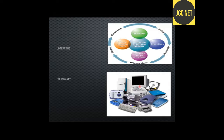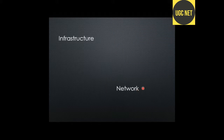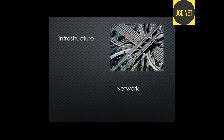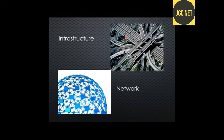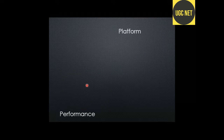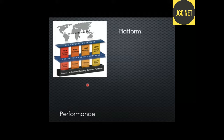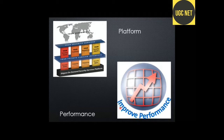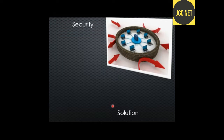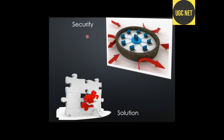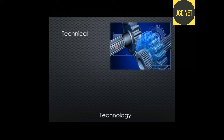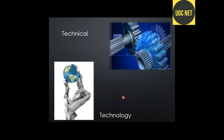Other types include hardware architecture, infrastructure architecture, network architecture, platform architecture, performance architecture, and security architecture — which focuses on protecting data from outside theft. There is also system architecture and software architecture. We will discuss all of them; this is just a brief introduction.